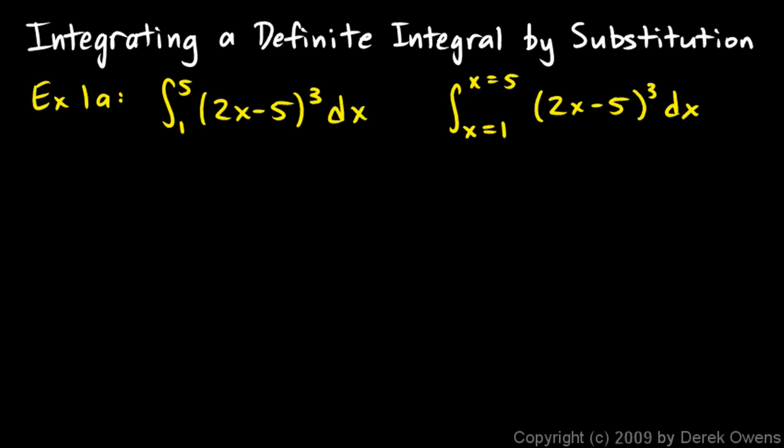Writing the little x equals there becomes useful, because when we start sticking a u in there, a different variable, it helps to be clear which variable is which. But just note that if you have a dx right here, then your limits are going to be in terms of x.